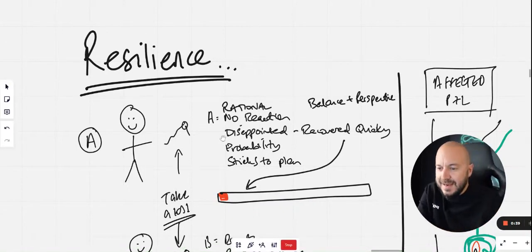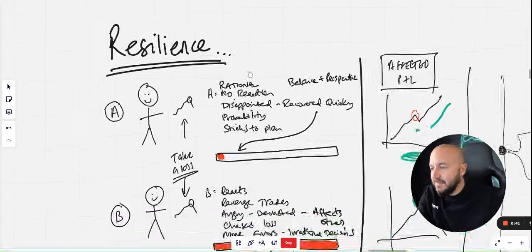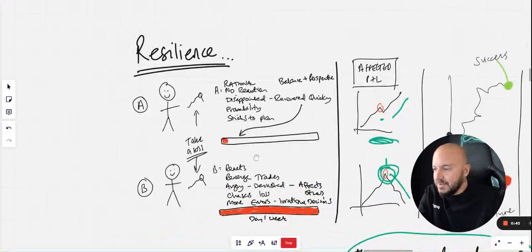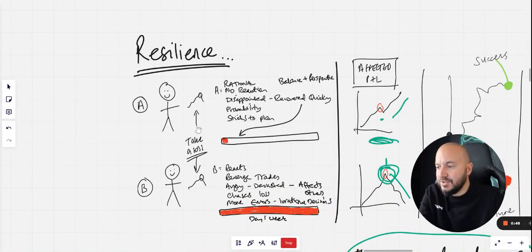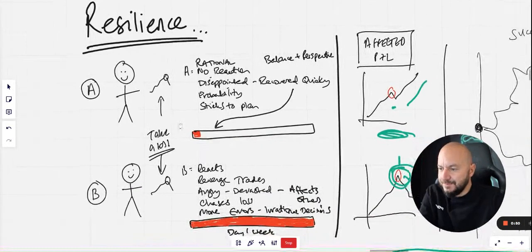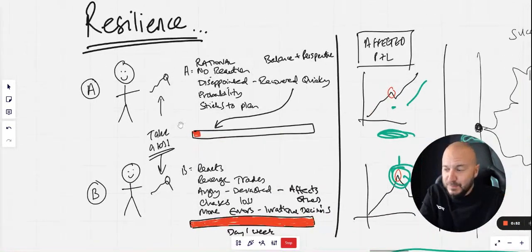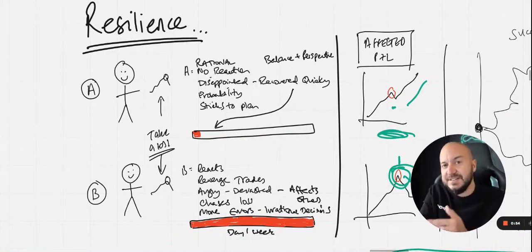So let me give you an example of that. Let's say the same thing happens to trader A and trader B. They both take a loss in the market, which we're all going to do. The difference here is how we handle those setbacks and those losses.